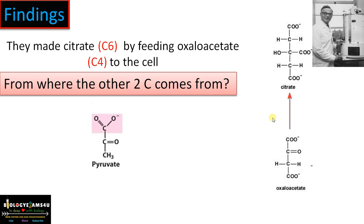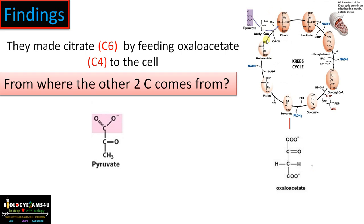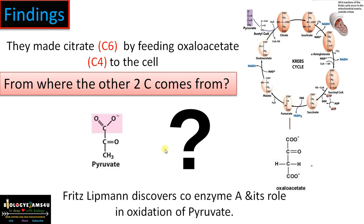How pyruvate, a three-carbon compound, contributes two carbons during this process was not known. By conducting many experiments, they confirmed that pyruvate is responsible for the formation of citrate by providing carbon atoms in the reaction. The involvement of acetyl coenzyme A — the two-carbon intermediate that connects glycolysis to the citric acid cycle — was not yet known. Later, Fritz Lipmann discovered coenzyme A and its role in the oxidation of pyruvate. The compound involved was found to be acetyl coenzyme A, a two-carbon compound that reacts with oxaloacetate to form citrate.